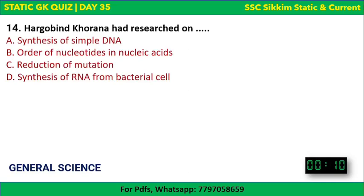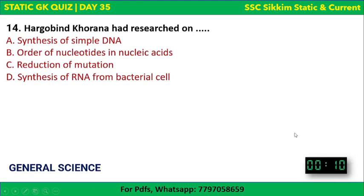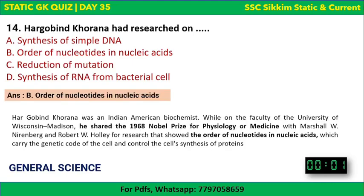Next question: Hargovind Khorana had researched on which topic? The answer is the order of nucleotides in nucleic acids. He is a Nobel laureate who received the Nobel Prize in Physiology or Medicine in 1968, shared with two other scientists.